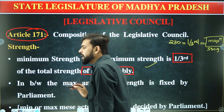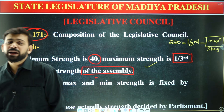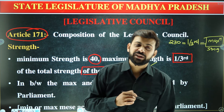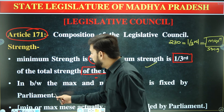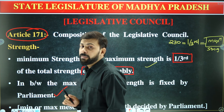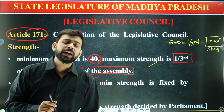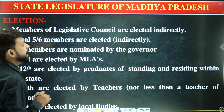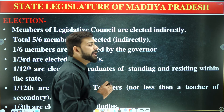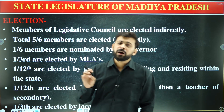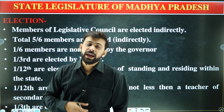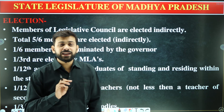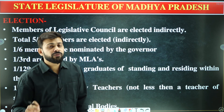The maximum and minimum strength of the legislative council is defined under Article 171. The members of the legislative council are indirectly elected. If I talk about the legislative assembly, we saw that its members were directly elected.